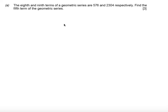In this question we're told the 8th and 9th term of a geometric series are 576 and 2304 respectively. Find the 5th term of the geometric series. In order to answer this question, I'm going to use the nth term of a geometric series, un is equal to ar to the power of n minus 1.